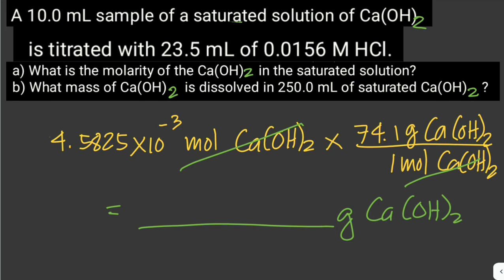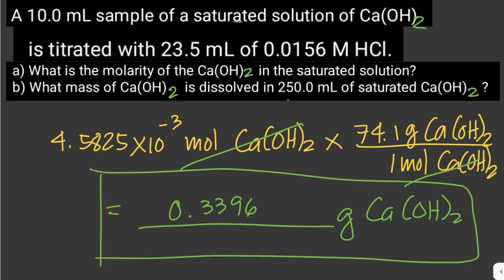4.5825 × 10⁻³ times 74.1 gives us an answer of 0.3396 grams of calcium hydroxide. So this is the mass of calcium hydroxide that is dissolved in 250 mL of saturated calcium hydroxide.